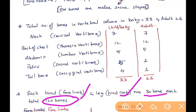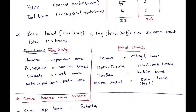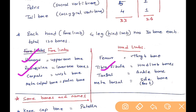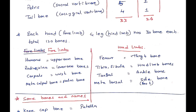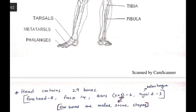Each hand (forelimb) and each leg (hind limb) has 30 bones, so all four limbs together have 120 bones. In the forelimbs: humerus (upper arm), radius and ulna (lower arm). In the legs: femur (thigh), tibia and fibula (lower leg). Carpals are wrist bones, tarsals are ankle bones, metacarpals are palm bones, metatarsals are sole bones, and phalanges are finger/toe bones.